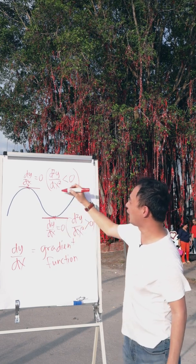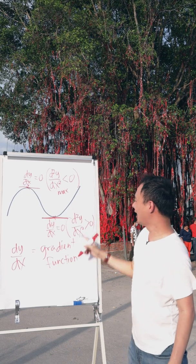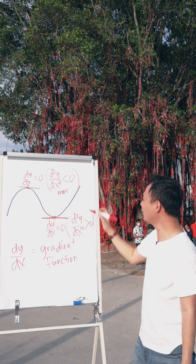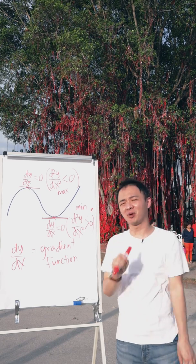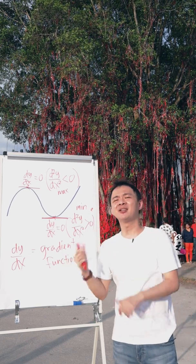So normally when this is less than zero, I will just write it is maximum. And when this is more than zero, which is a positive value, I will say it is minimum. So this is one of the very important concepts of this topic, differentiation.